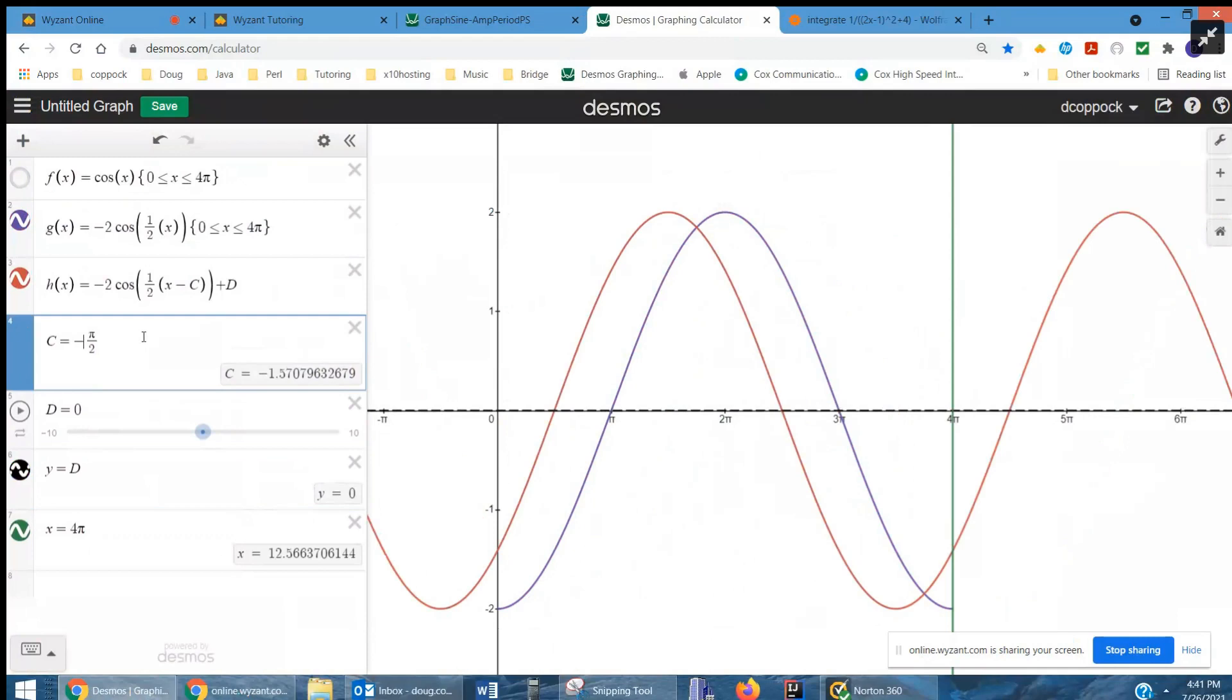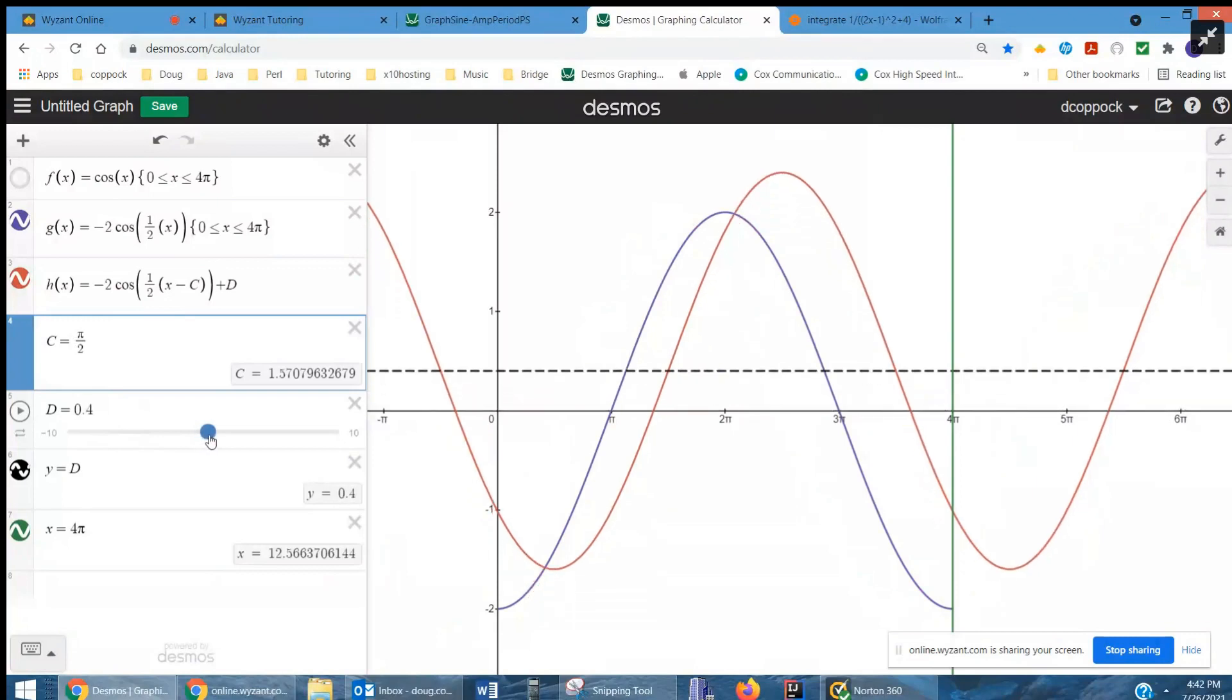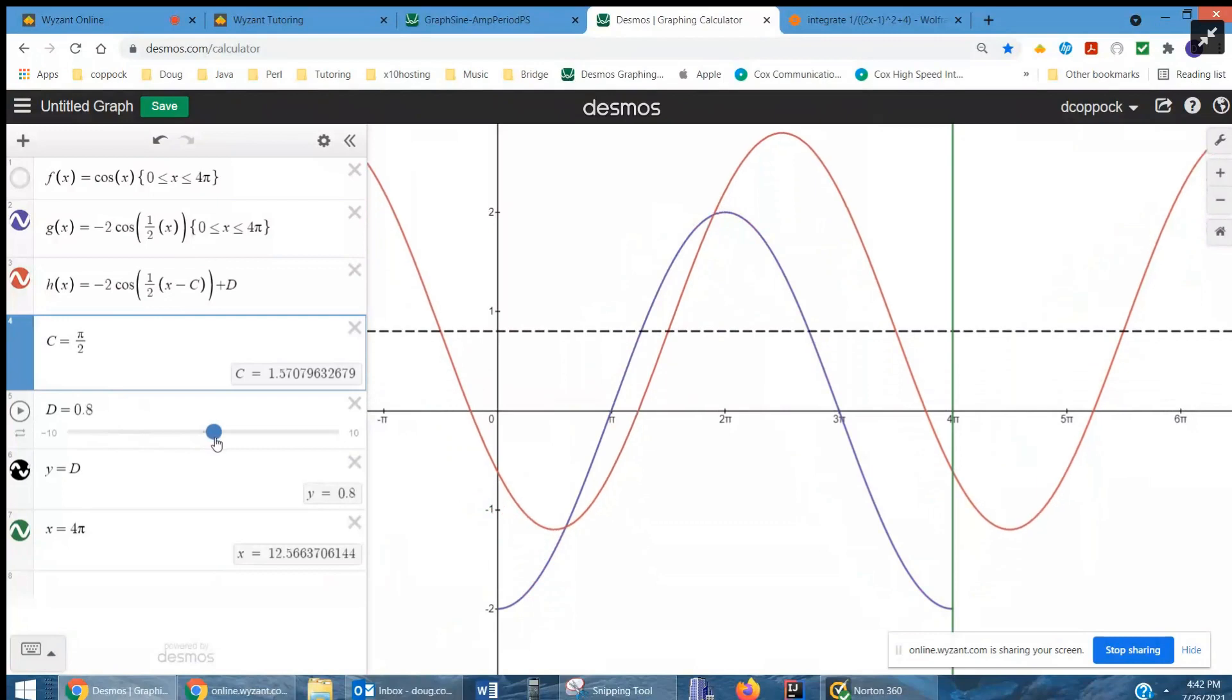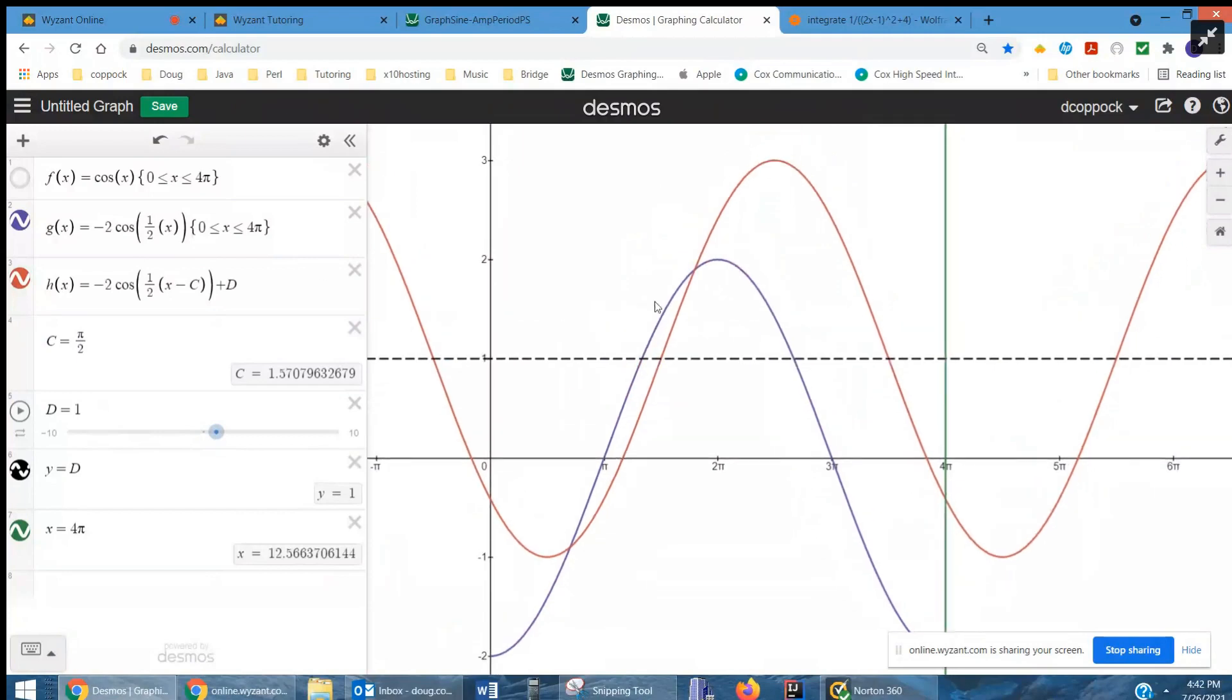And finally, this D controls—I'll change this back to π/2—D controls the midline. So if I say that D is 1, that whole red graph is shifted up one unit, including the midline.